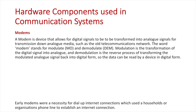Modulation is the transformation of the digital signal into analog, and that's what happens when the data is transformed from the computer so that it can be transmitted down analog mediums. Demodulation is the reverse — a computer receives an analog signal from the telecommunications network, demodulates the signal, and puts it back to digital so that it can be read on the receiver's computer at the destination.